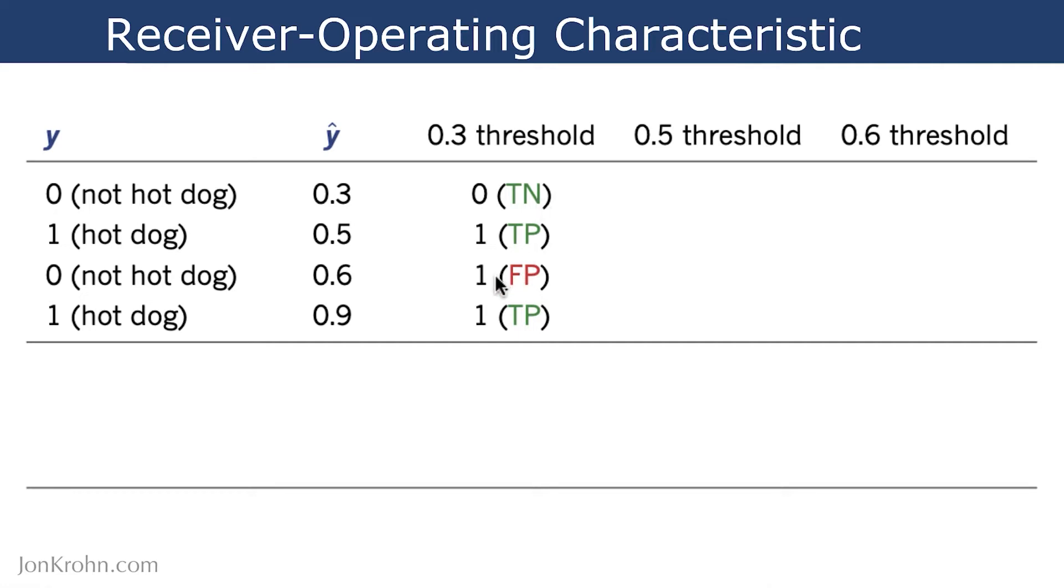And then we finally have this situation here, where the algorithm is predicting that it's a hot dog at this 0.3 threshold. So a y-hat of 0.6 is above 0.3, so our algorithm is saying yes, at this threshold, I predict that there is a hot dog here, but in fact, there is not a hot dog there, so this is a false positive.